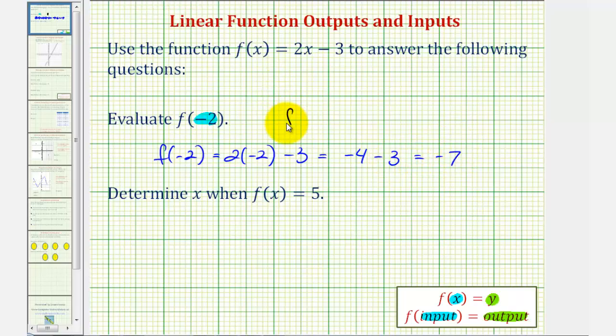So we can say f of negative two equals negative seven. We'll take a look at what this means graphically in just a moment.